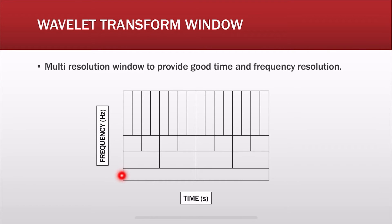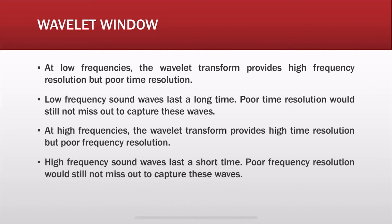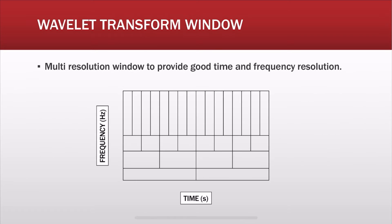For example, this is the lower end of this window — it's a low frequency. You have high frequency resolution but poor time resolution. In contrast, at high frequencies, the wavelet transform provides high time resolution but poor frequency resolution. These are the high frequencies, and you have high time resolution but poor frequency resolution.